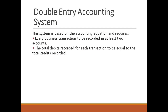All businesses use what is called the Double Entry Accounting System. This system is based on the accounting equation and requires that every business transaction be recorded in at least two accounts. The total debits recorded for each transaction must equal the total credits recorded. The Double Entry Accounting System also has specific rules of debit and credit for recording transactions in the accounts.